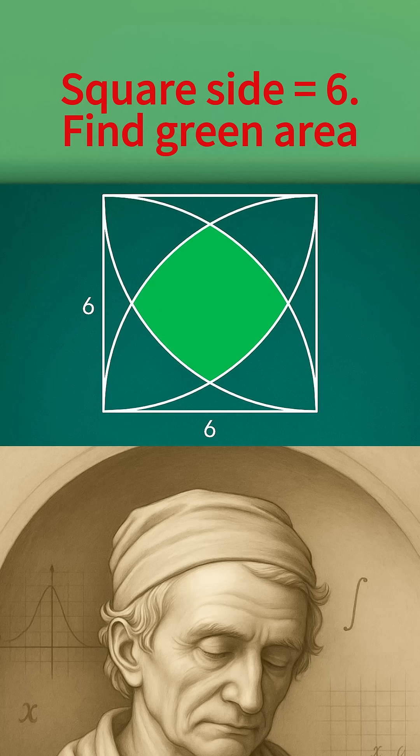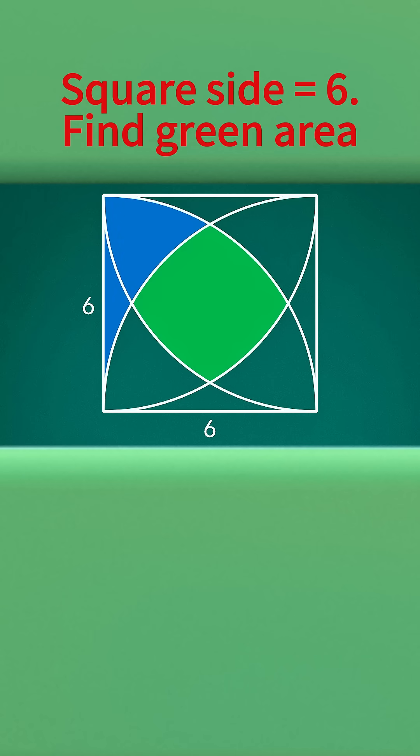The solving idea is to subtract the area of the white empty parts from the total area. How do we find the area of the white parts?